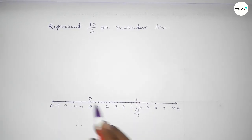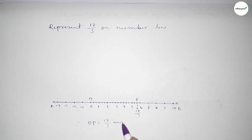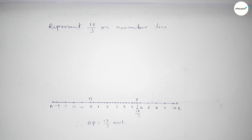Mark points O and P, so therefore OP equals 17/3 units. That's all. Thanks for watching — if this video is helpful to you, please share it with your friends.